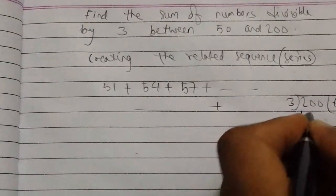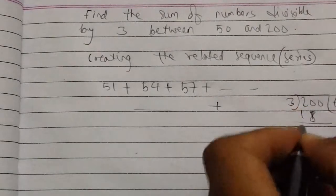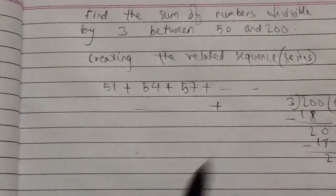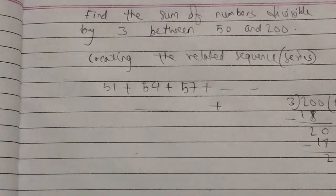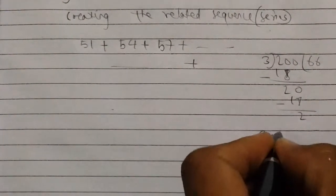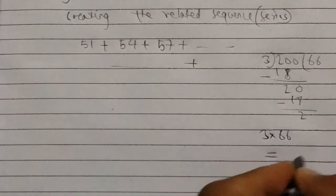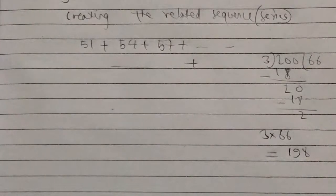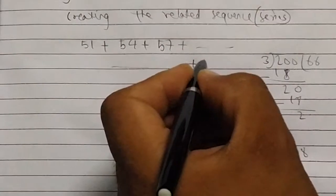3 times 6 is 18. And 3 times 66 is 198. So we need to find what number is exactly divisible by 3 within 200. The last number is 198.